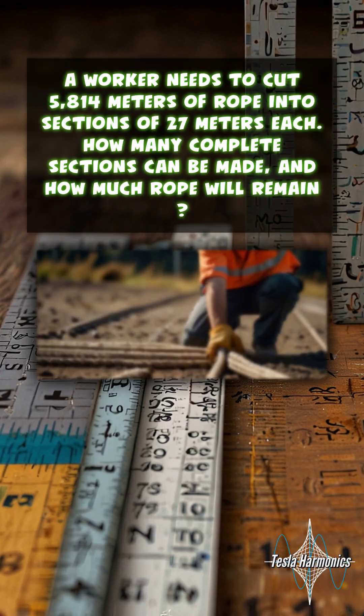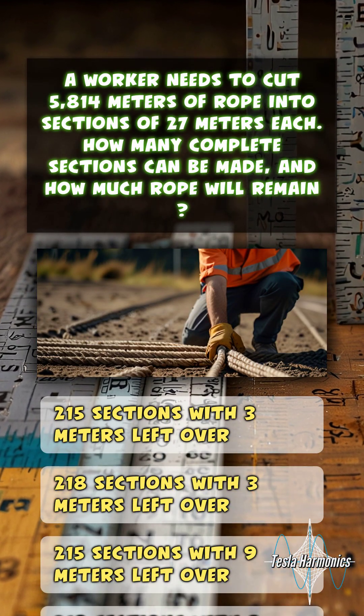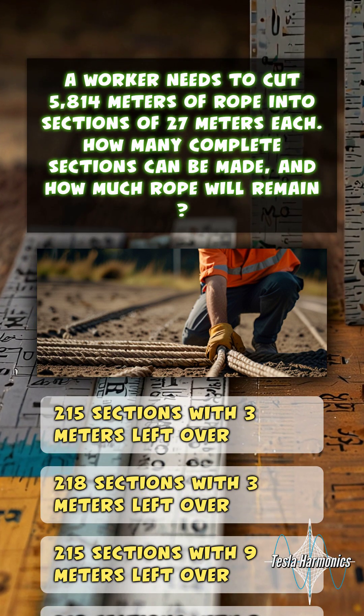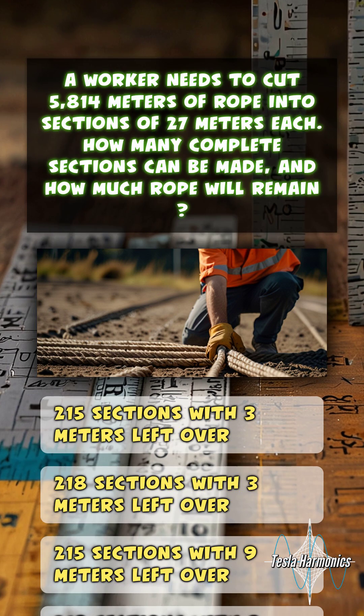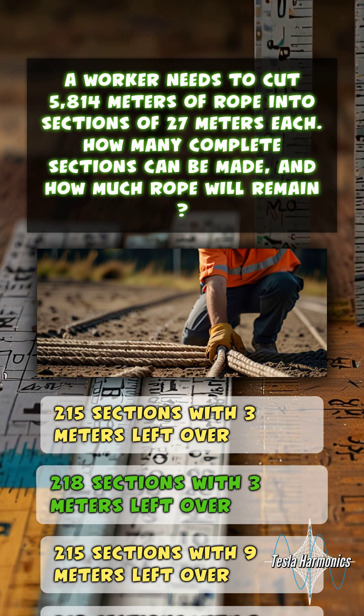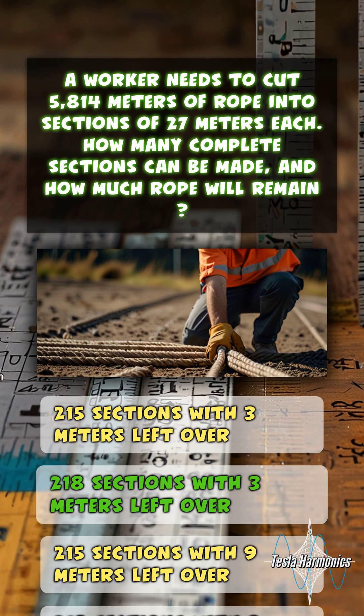192. A worker needs to cut 5,814 meters of rope into sections of 27 meters each. How many complete sections can be made, and how much rope will remain? 218 sections with 3 meters left over.